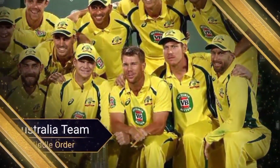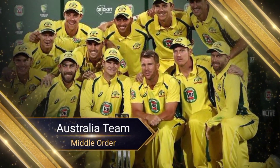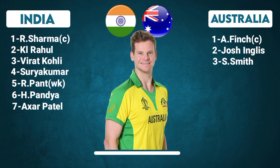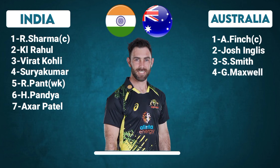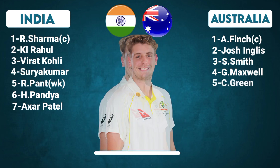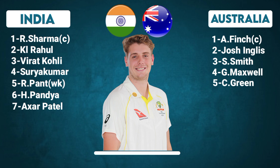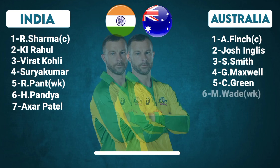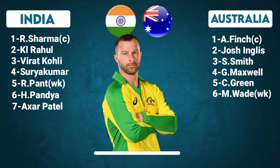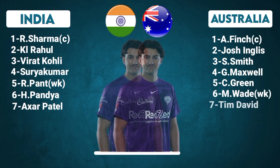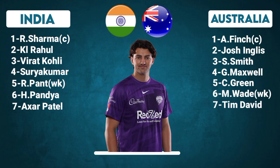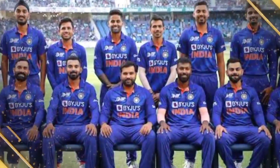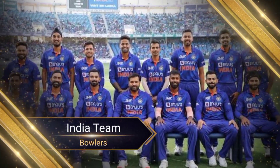Australia Team Middle Order — Number 3: Steven Smith, Right-Hand Batsman. Number 4: Glenn Maxwell, All-Rounder. Number 5: Cameron Green, All-Rounder. Number 6: Matthew Wade, Wicketkeeper and Left-Hand Batsman. Number 7: Tim David, Right-Hand Batsman.